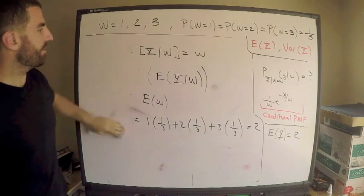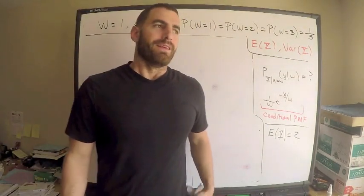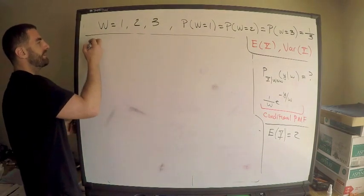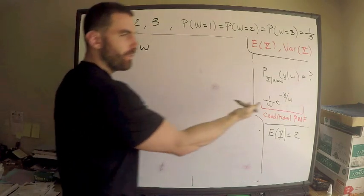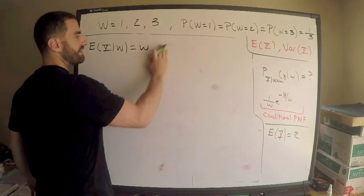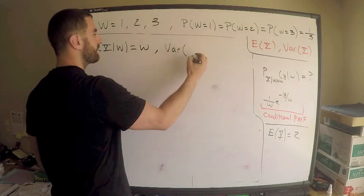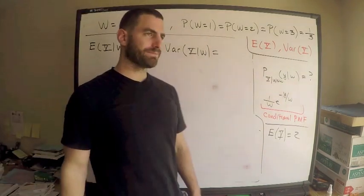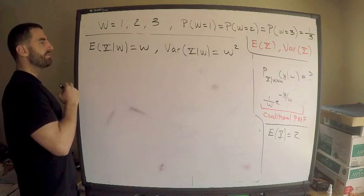Now what is the variance of Y? I want to deduce something from what we're given. The conditional distribution of Y given W is exponential with mean W, so E[Y|W] = W. Since you're studying for Exam P, you also know the variance of an exponential: Var(Y|W) equals one over lambda squared. Since lambda is one over W, this equals W squared.